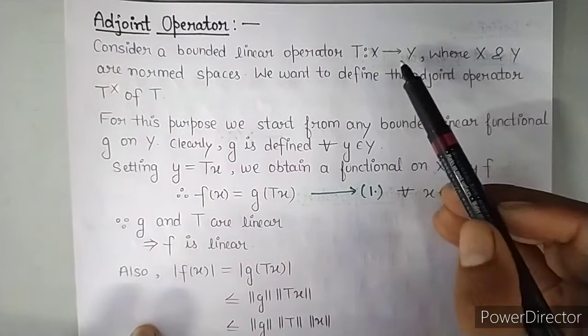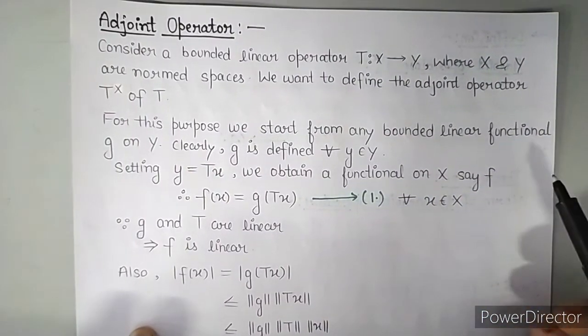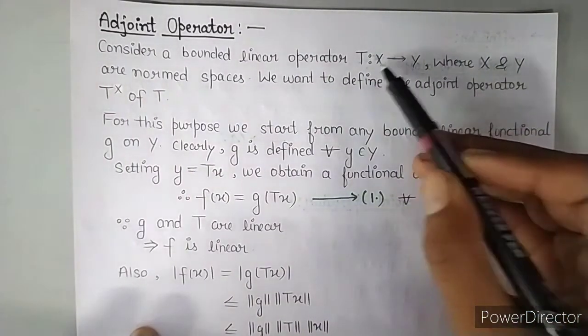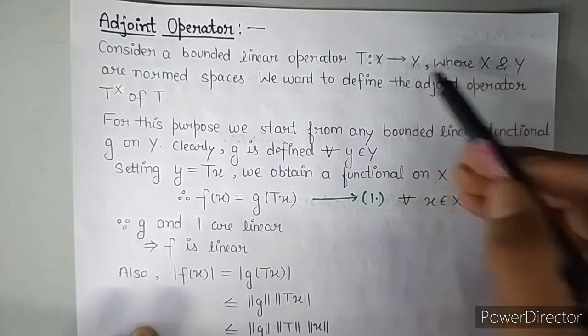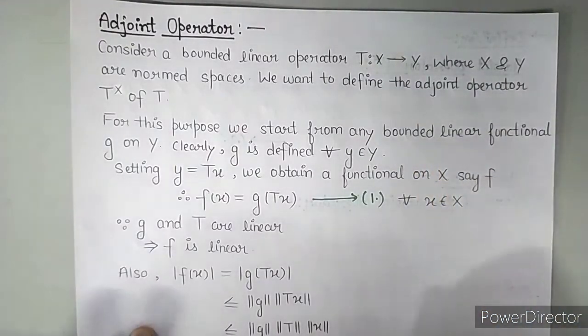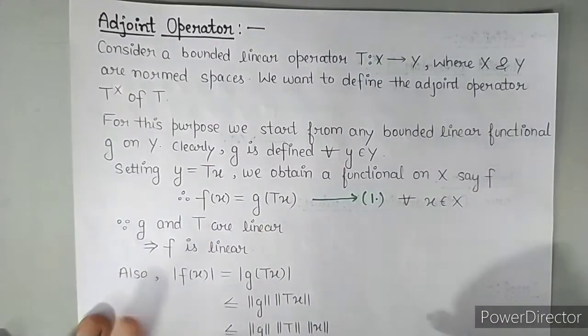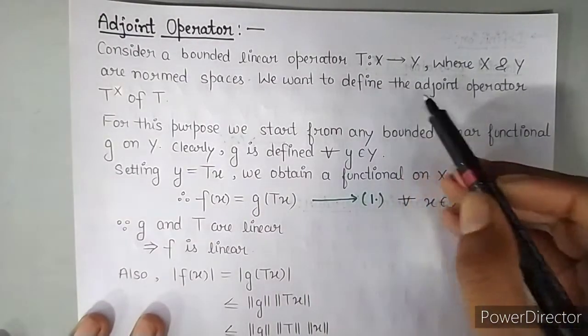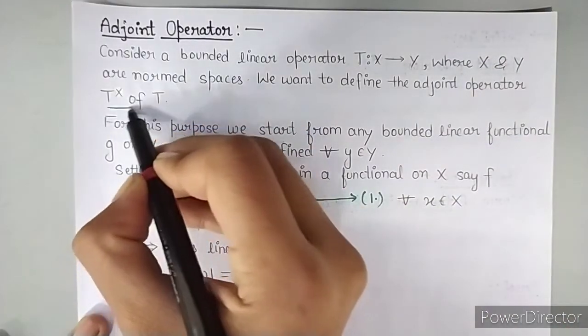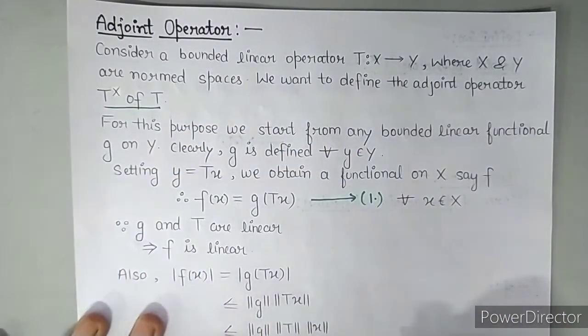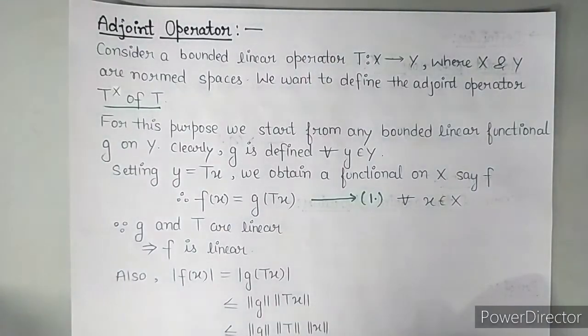So we have considered a bounded linear operator T, which goes from one norm space to another norm space. So T is from X to Y where X and Y are norm spaces. And we want to define the adjoint operator T star of T.